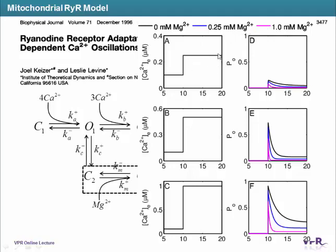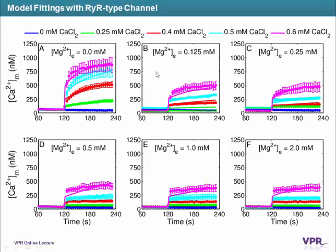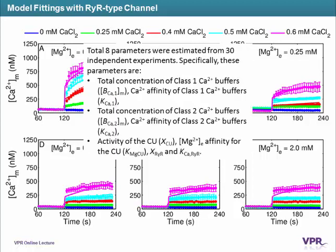This is the step-up response of calcium, and these are the opening probabilities. When you increase calcium, you get higher opening probability, and when you add more magnesium, the rate of adaptation of the channel is affected. The mitochondrial model is able to fit the data with that ryanodine-type channel. We cannot definitively say there is a ryanodine receptor in mitochondria, but we can say there is a ryanodine-type channel responsible for fast calcium uptake. Eight parameters were used to fit 13 independent experiments.